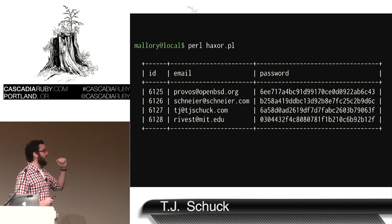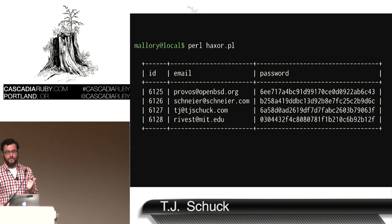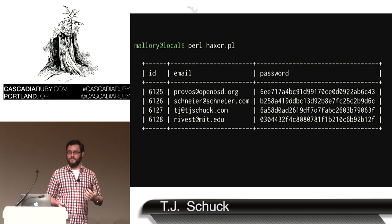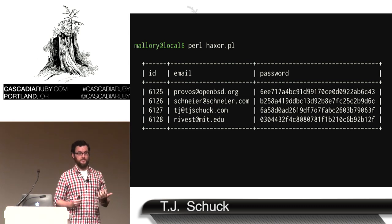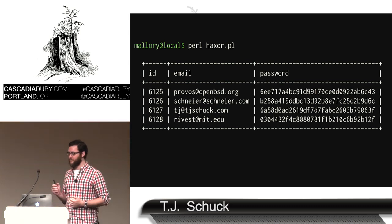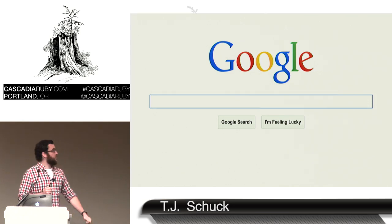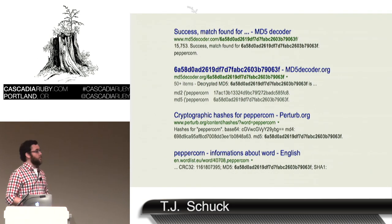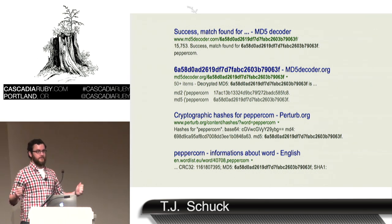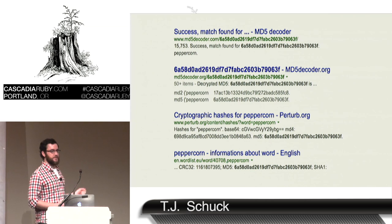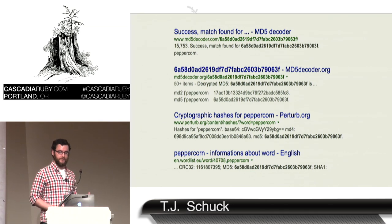Mallory has this dump and wants to work backwards from a table to see what the original value was. As a proof of concept, we can use the world's best lookup table, which is Google. If you just drop in the hash and Google it, you can see right on the results page that that MD5 is for 'peppercorn'. So Mallory, using a better tool than just Google, can figure this out.